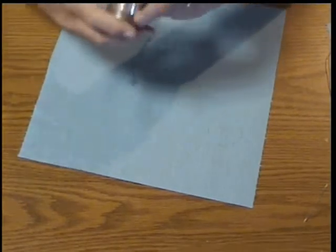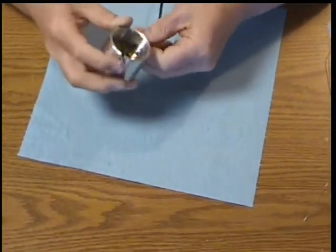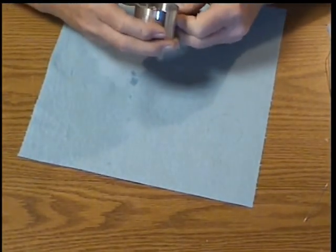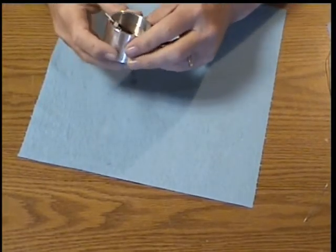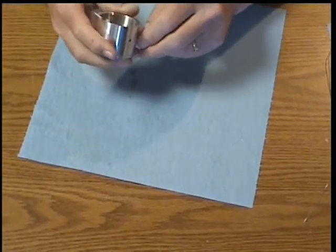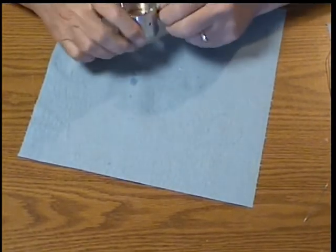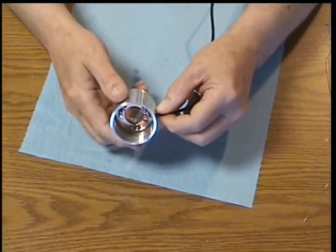So we've tinned them. Now we pull this back into the probe body. Try to get the red wire closest to the positive side of the LED as you're pulling it back into the body of the probe.